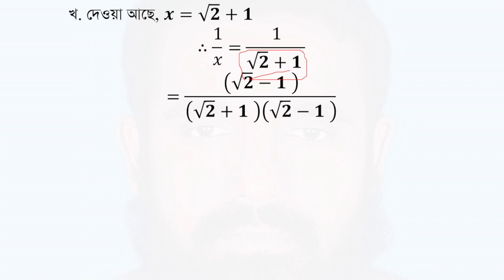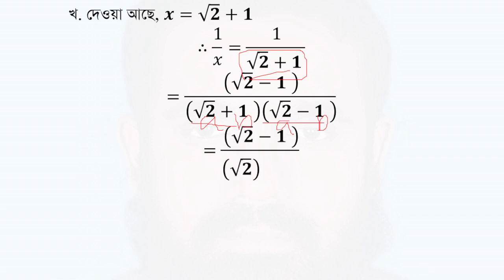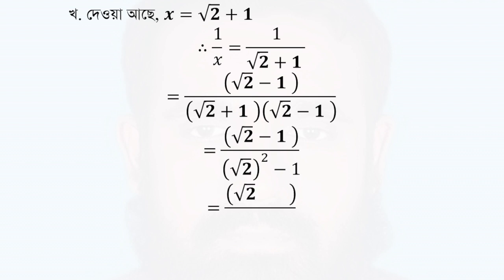Now we write this as root 2 plus 1 and root 2 minus 1, using the identity a plus b into a minus b. So root 2 plus 1 multiplied by root 2 minus 1. Writing as a plus b into a minus b gives us 1. So x plus 1 by x and x minus 1 by x can be determined.